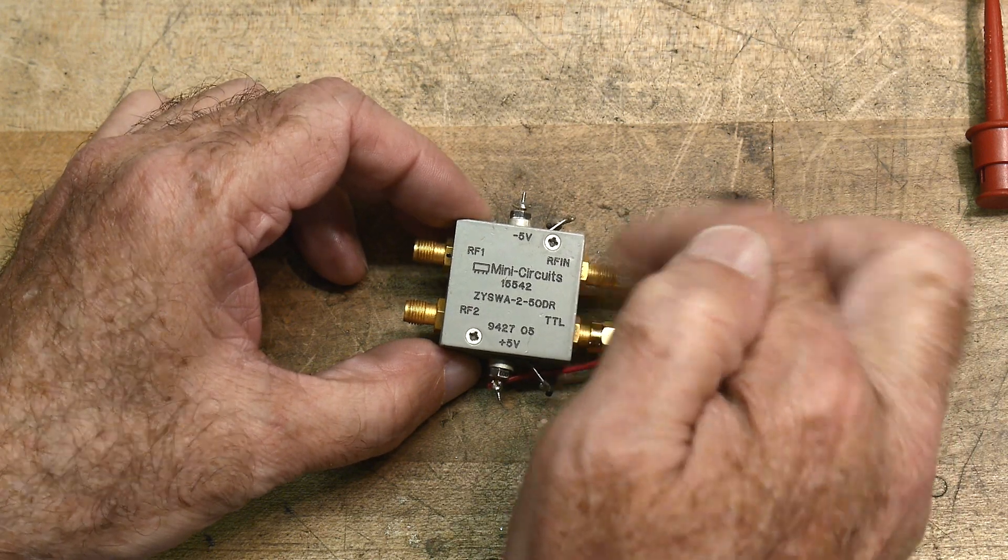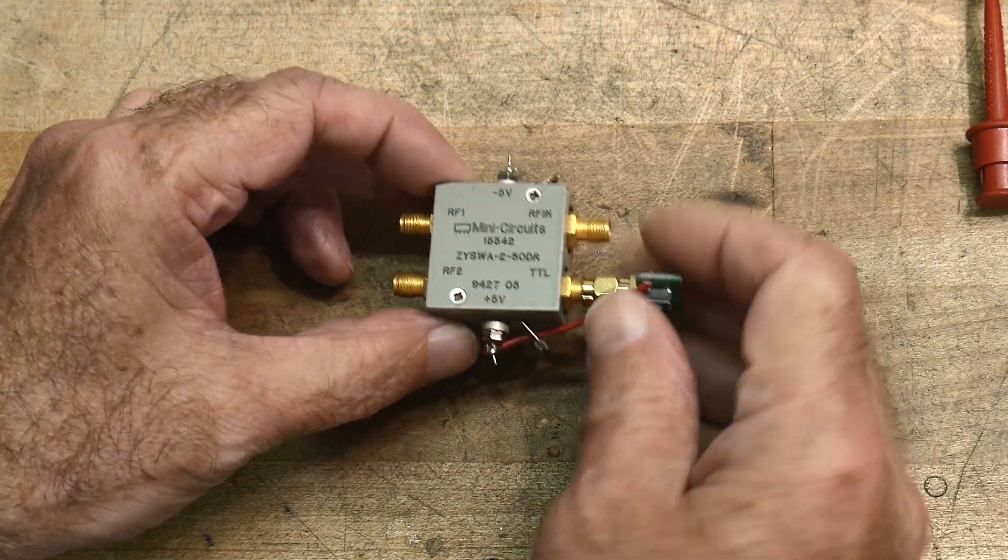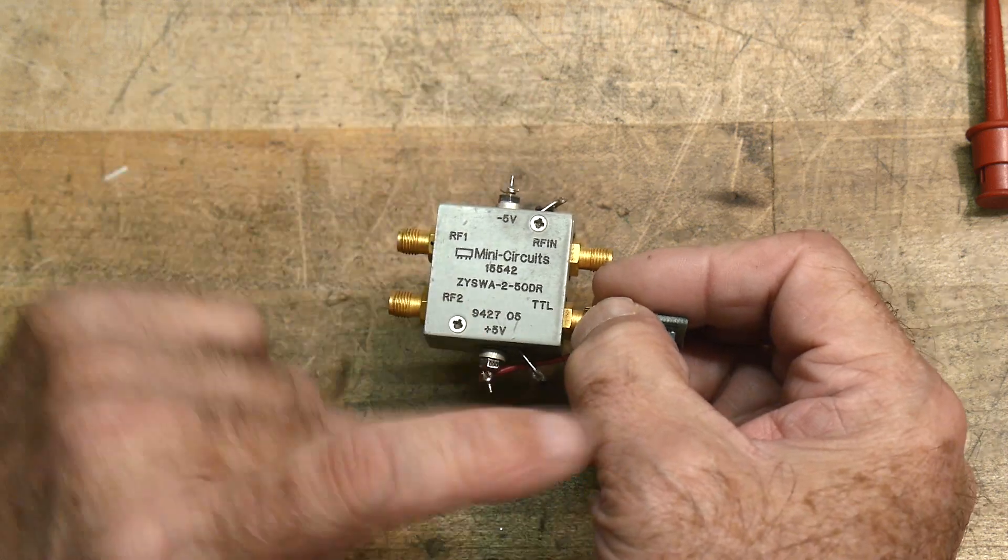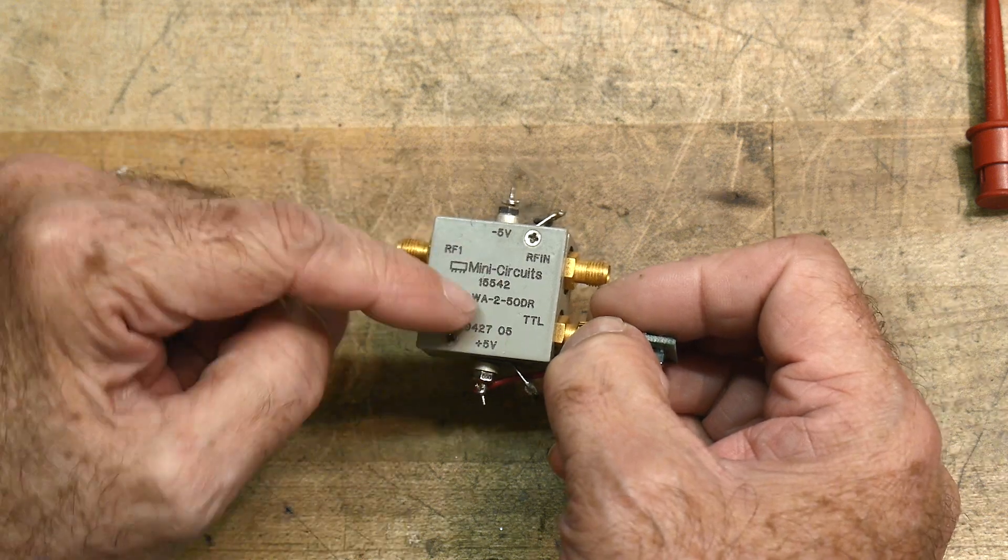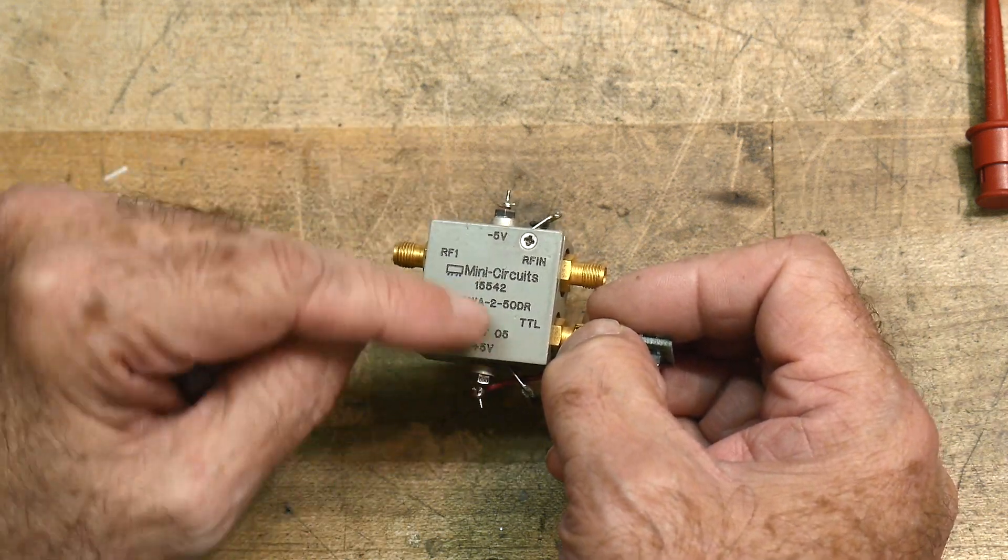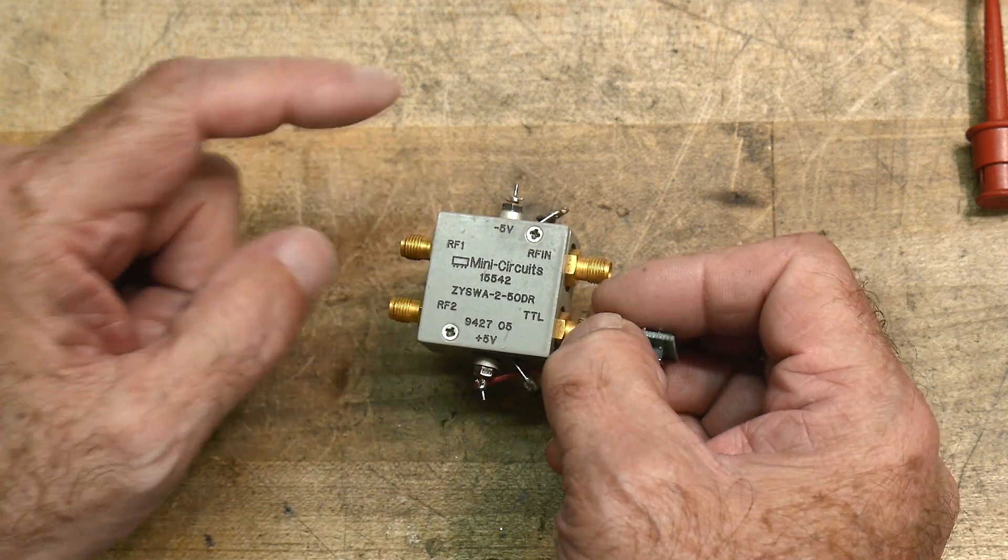It's TTL level controlled. So there's an SMA connector here, so there's four SMA connectors. I have a little thing I built onto here, so I kind of ignored that. That didn't come with it. But there's a TTL level switch in here, so there's circuitry in here that's TTL level, and then it does this RF switching.